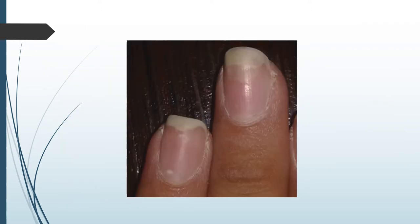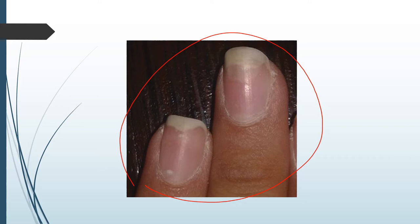This picture demonstrates onycholysis seen in the case of hyperthyroidism. We can see the nails being separated from the nail bed — the extra white portion demonstrates the separation, and it is painless.